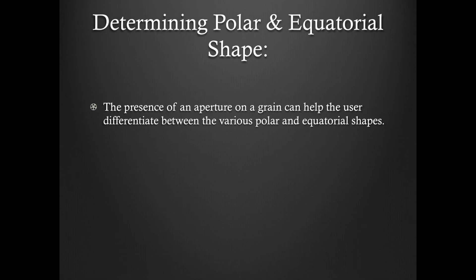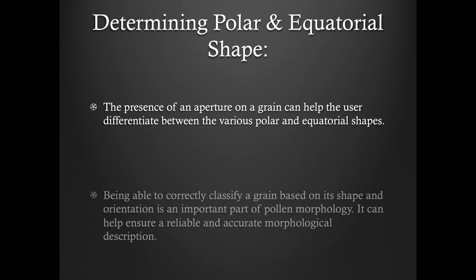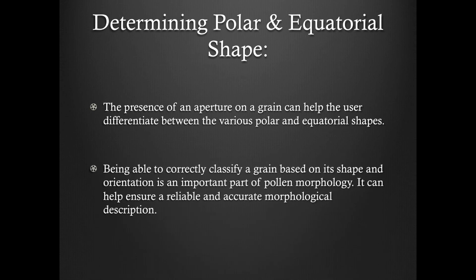The presence of an aperture on a grain can help the user differentiate between the various polar and equatorial shapes. Being able to correctly classify a grain based on its shape and orientation is an important part of pollen morphology. It can help ensure a reliable and accurate morphological description.